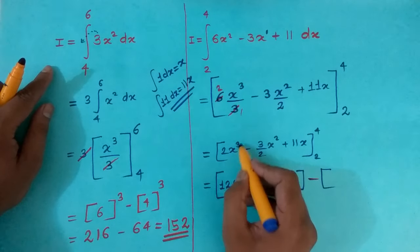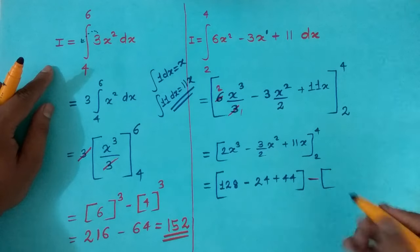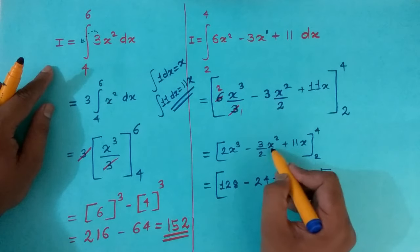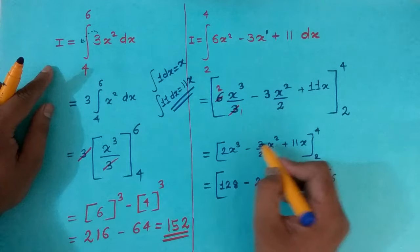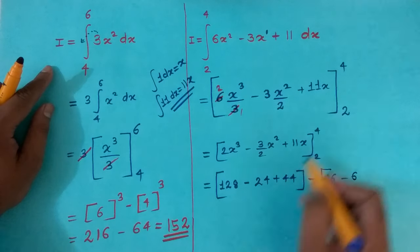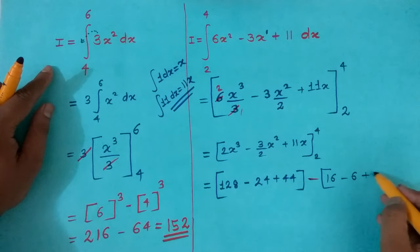That is 2, 2 cube 8, 8 2 times 16, 2 square 4, 4 upon 2 2, 2 3 times 6, 2 into 11 is 22.